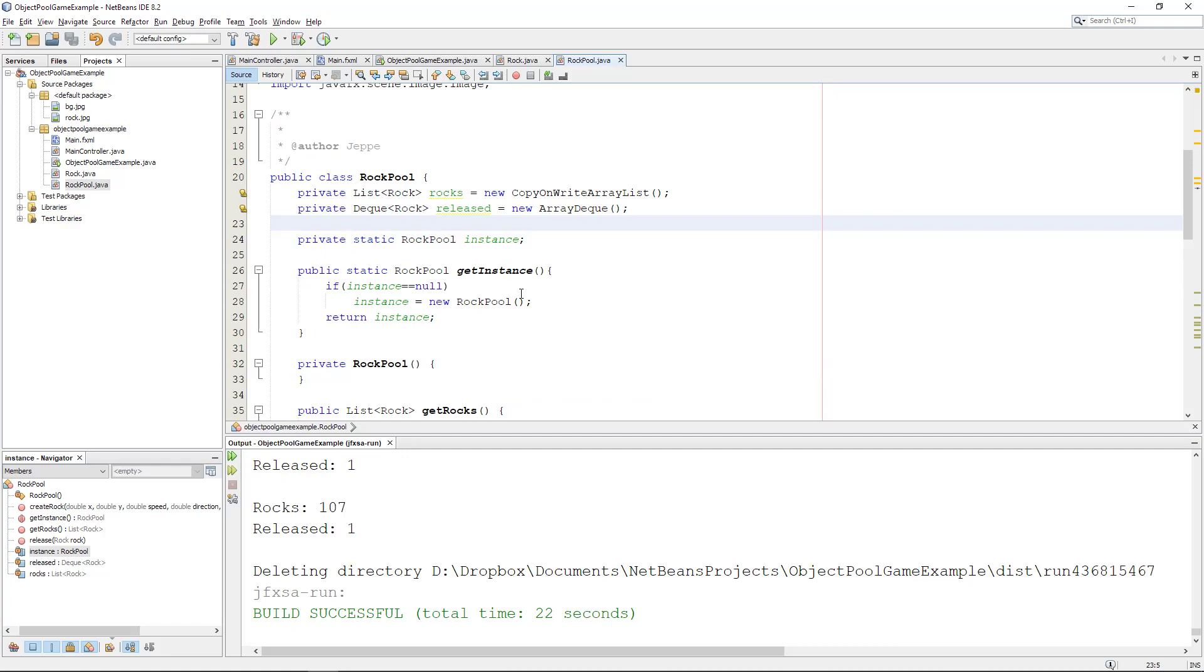If we reach that pool size we cannot create any more rocks for now, so we would have to handle that from the outside. What if we want to create something and we are not allowed to? We could use exceptions or we could just have a simple boolean.